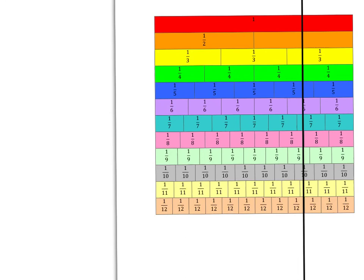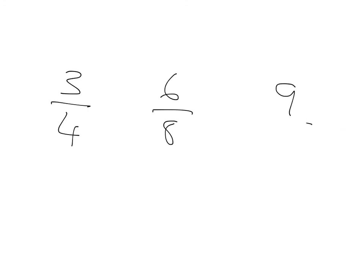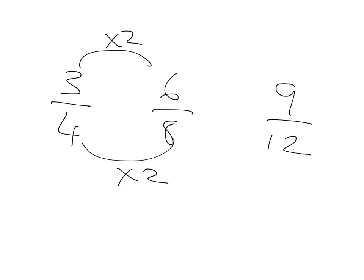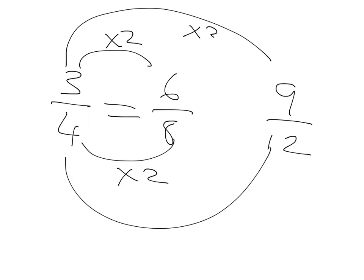Hopefully you identified where three quarters is — one, two, three of the quarters — put a line down, and went to find all the fractions that are equal. You found three quarters, and the next one that you came across would have been six eighths. If you went further down your line, you would have got nine twelfths. So you had three quarters, six eighths, and nine twelfths. Multiplying top and bottom by two gets you from three quarters to six eighths, and multiplying top and bottom by three gets you from three quarters to nine twelfths. So three quarters, six eighths, and nine twelfths are all exactly the same.